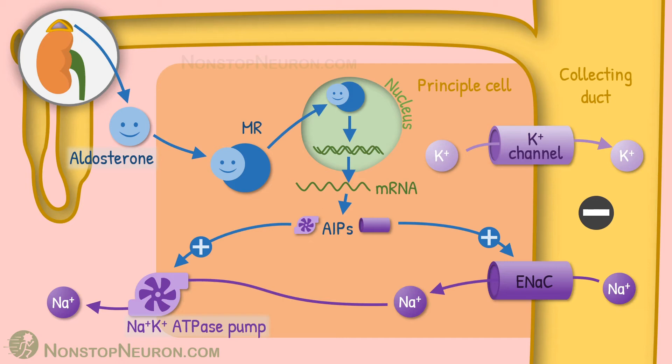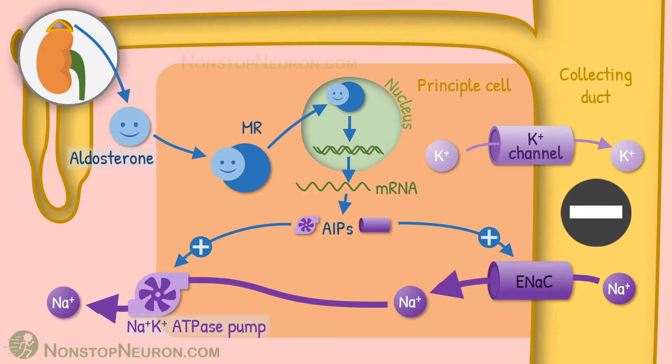Also there are other proteins that increase the availability of these transport proteins on the membrane and their activity as well. Thus, under the influence of aldosterone, sodium reabsorption is increased. This makes the lumen even more electronegative, which in turn increases potassium secretion.